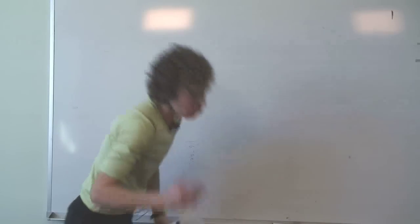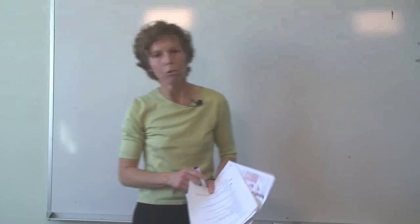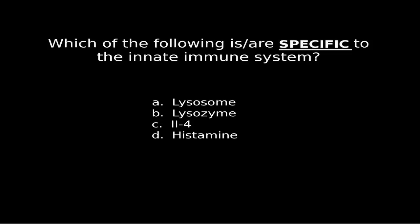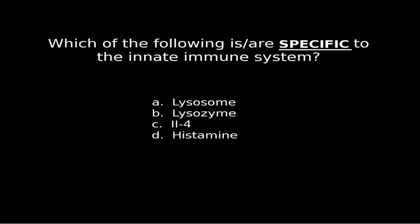With that overview, let's go into the first quiz — question number one: Which of the following is a specific component of the innate immune system? We have A, lysosome; B, lysozyme; C, IL-4; and D, histamine.